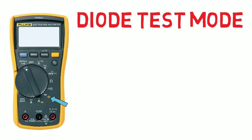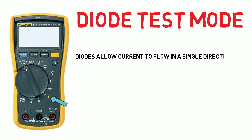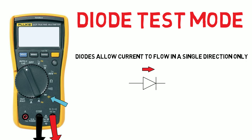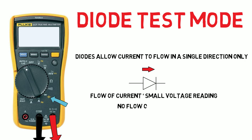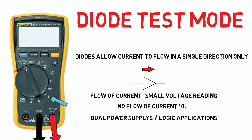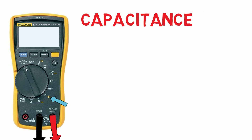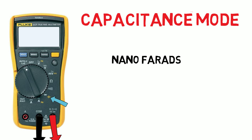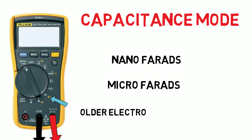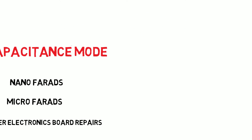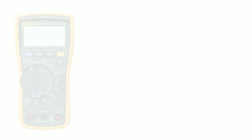In diode mode the meter can be used to detect if a diode is functioning correctly. A diode is a device that allows current to flow in a single direction and can be either forward or reverse biased. If connected to a diode in this mode the meter will read a small voltage if the diode is allowing flow from the red probe to the black, and will show open circuit if the diode is not allowing current to flow. Diodes can be found in dual power supply setups and for some hardwired logic applications. If we press the function button while in this mode it will allow us to test for capacitance of a capacitor from nano to microfarads. You won't frequently be taking capacitance readings as a technician, as this is normally reserved for old electronic board repair applications.